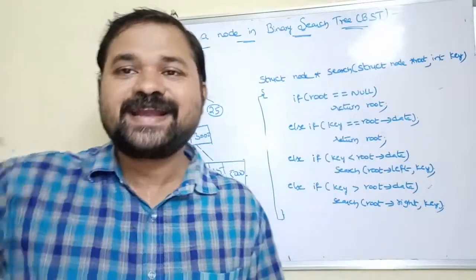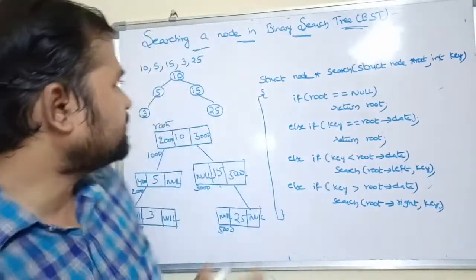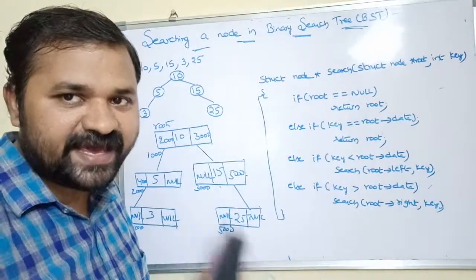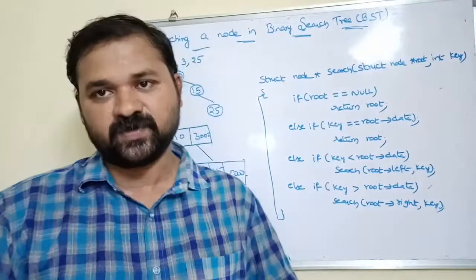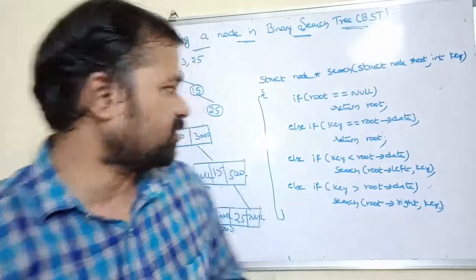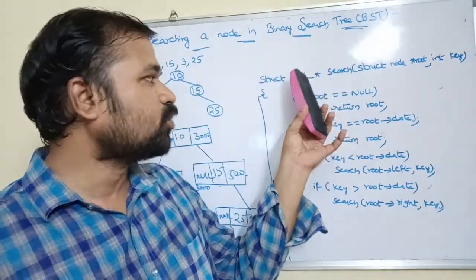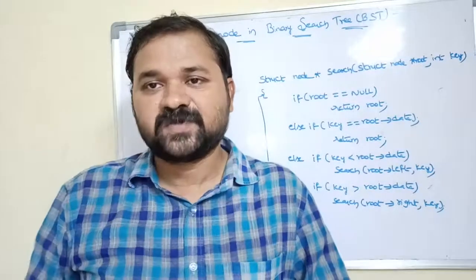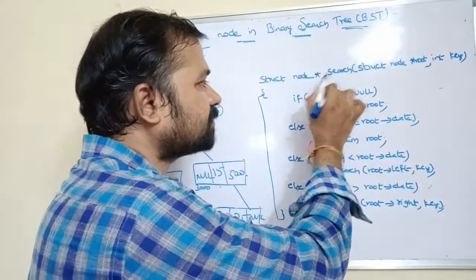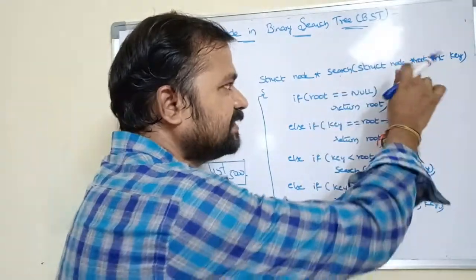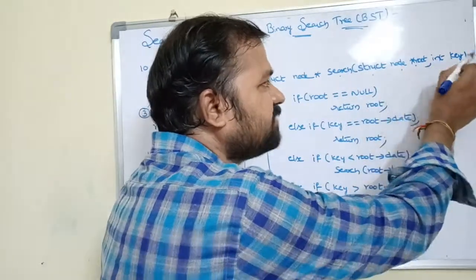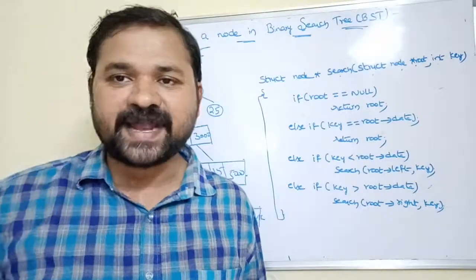Let's see the logic for searching. The function returns a struct node pointer because we are returning the address of that node. For example, if key is 25 and the address of node 25 is 5000, we return that address. To store it, we declare a pointer: struct node star. The function is called search() and has two parameters: struct node star root and the key value.